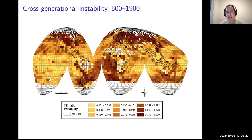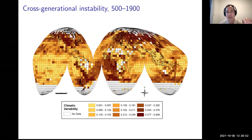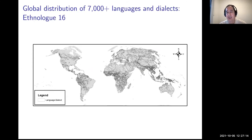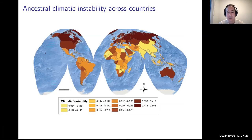If my ancestors lived in a grid cell with a lot of instability, culture or tradition will not be very important, and we won't have much mismatch today because actions will change and respond to the environment relatively quickly. To match this to countries, we link the location of about 1,300 to 1,400 ethnic groups traditionally — using their pre-industrial locations — to grid cells, then link those to languages spoken today. Through that process, we calculate measures of ancestral climatic instability across countries today.